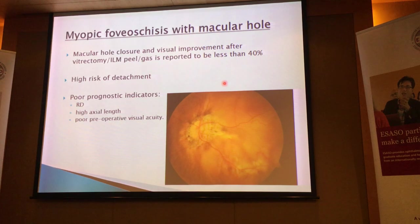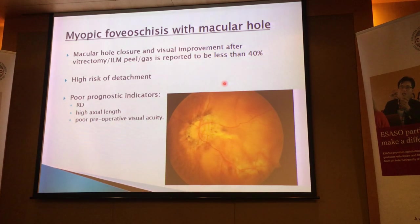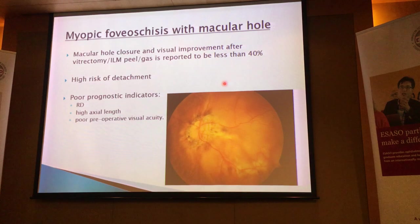On top of that, these patients are also very liable for retinal detachment as well. What are the prognostic indicators that tell you this eye is not going to do well? Firstly, if they already have a retinal detachment, then you know this is an eye that probably isn't going to do well no matter what you do. If the patient has a very high axial length — especially more than 30mm — then again, this may not be something you want to overpromise. If the patient has very poor pre-operative visual acuity — counting fingers or worse — then these are also eyes that you probably don't want to overpromise.